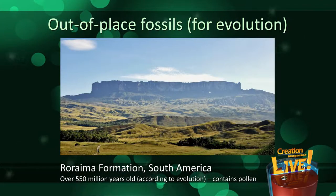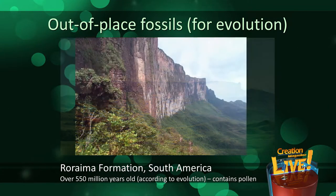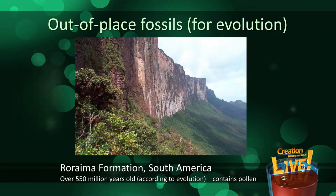Here's a picture of the Roraima Formation in South America, dated by evolutionists to be about 550 million years old — it contains pollen. According to evolutionary theory, flowering plants that produce pollen didn't evolve for another 390 million years. That's a big problem for evolution, but of course not at all surprising with the biblical account. Other out-of-place fossils for evolutionists include animals that should not be around at the time of dinosaurs. Paleontologists have found 432 mammal species in the dinosaur layers — almost as many as the number of dinosaur species. Incredible!